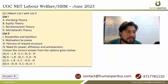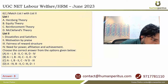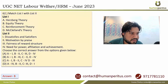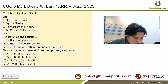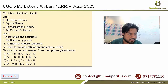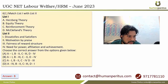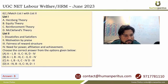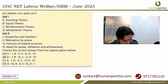In the match-the-column: Herzberg's theory is related to dissatisfied and satisfied — so B matches 3. Equity theory is related to fairness of reward structure — so B matches 3. Reinforcement theory relates to motivation by praise — so C matches 2. McClelland's theory involves need for power, affiliation and achievement — so D matches 4. Option B is the correct answer.